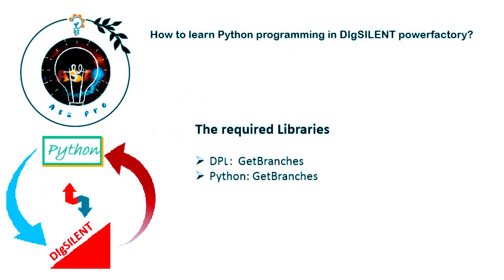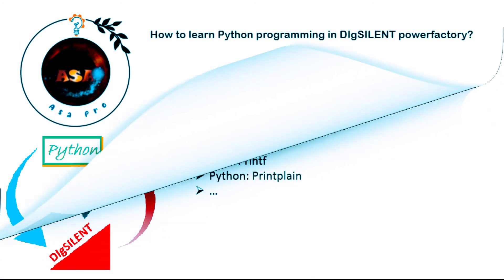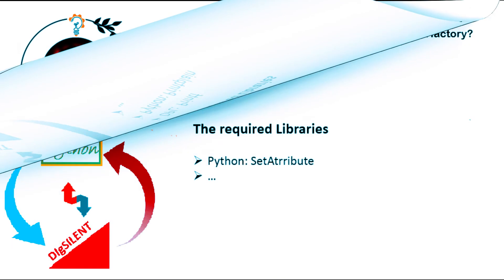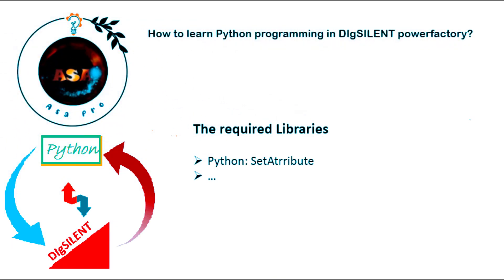Some of the functions in DPL can be written in Python in the same way, like the GetBranch command which is written similarly for both DPL and Python. Some of them perform the same task except for a few changes in the name, like printf and print, which are used for printing string, float, integer, octal, and hexadecimal values onto the output screen.